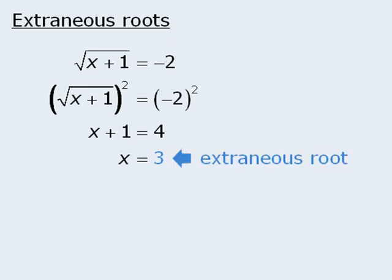Extraneous roots can arise when we square numbers, as we did in this step here. When we squared negative 2, it turned into positive 4, and this caused our problems. So when we are dealing with equations with square roots, we must be sure to watch out for extraneous roots.